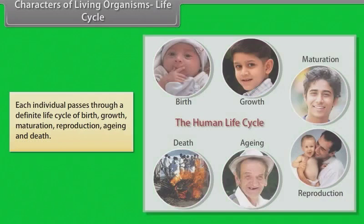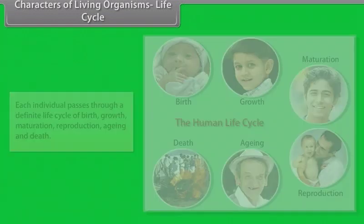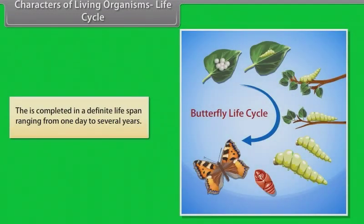Each individual passes through a definite life cycle of birth, growth, maturation, reproduction, aging and death. This is completed in a definite life span ranging from one day to several years.